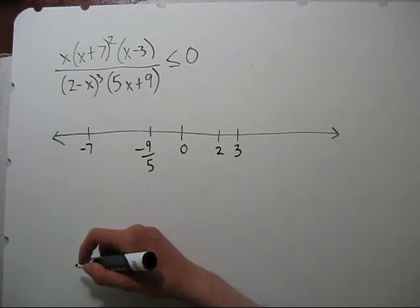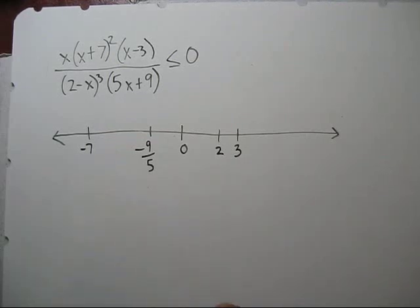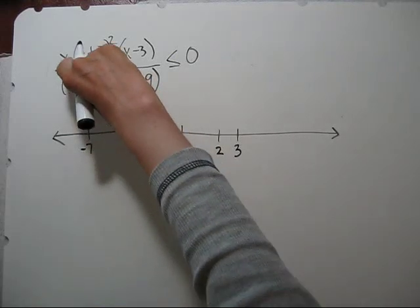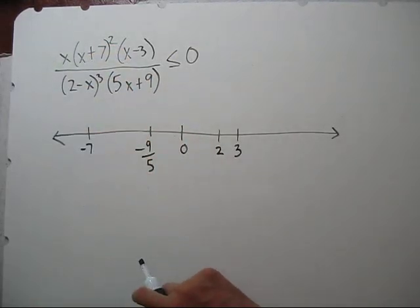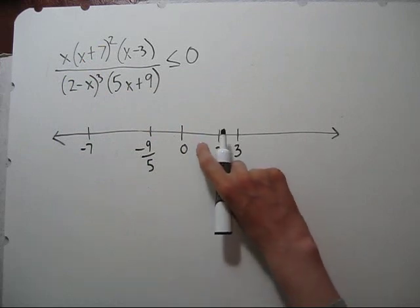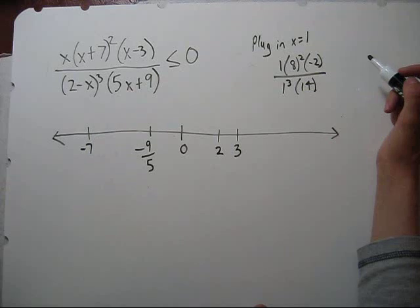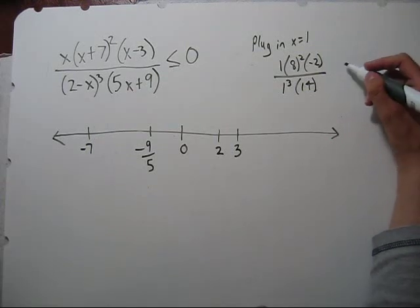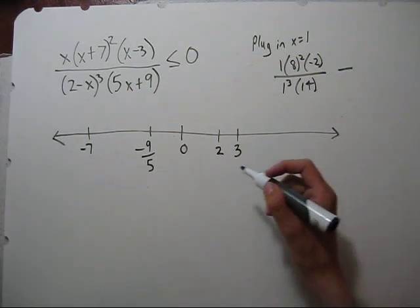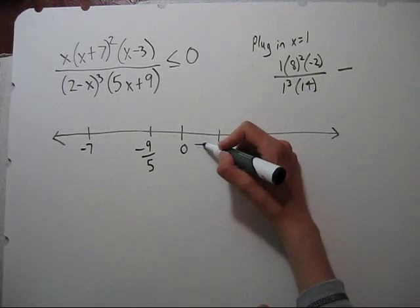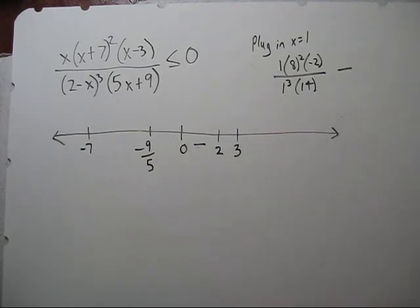Now we need to pick a number to plug in. We can't plug in zero, even though that's a nice one, because that would just make this zero. So let's plug in a one. We don't need the actual number. We just need to know its sign. It's negative. So that means that between zero and two, where our one is, this is going to be negative. Now let's use multiplicity to find the rest.